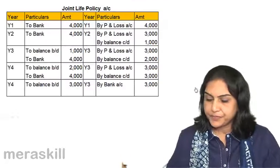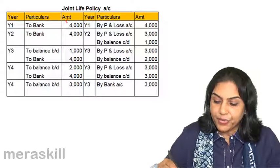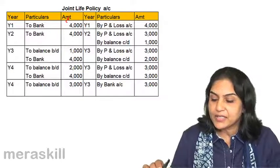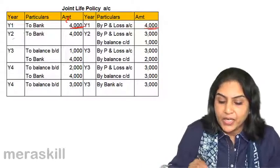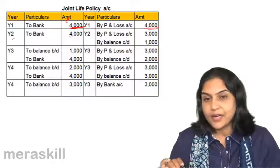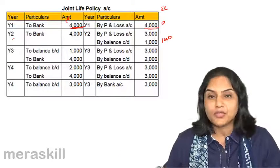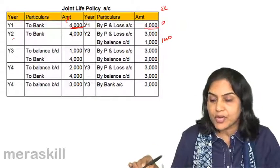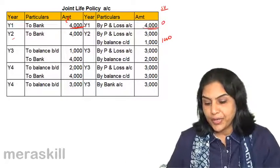In year 1, we pay: joint life policy account debit to bank, 4,000. The surrender value was 0, therefore we cannot have any balance in this account. By profit and loss account, 4,000 is written off and this account is closed with no balance. In year 2, again to bank 4,000. In year 2, the surrender value of the policy was 1,000, so we can retain 1,000. The remaining 3,000 — that is 4,000 minus 1,000 — goes to profit and loss account. A balance of 1,000 is shown in the account.